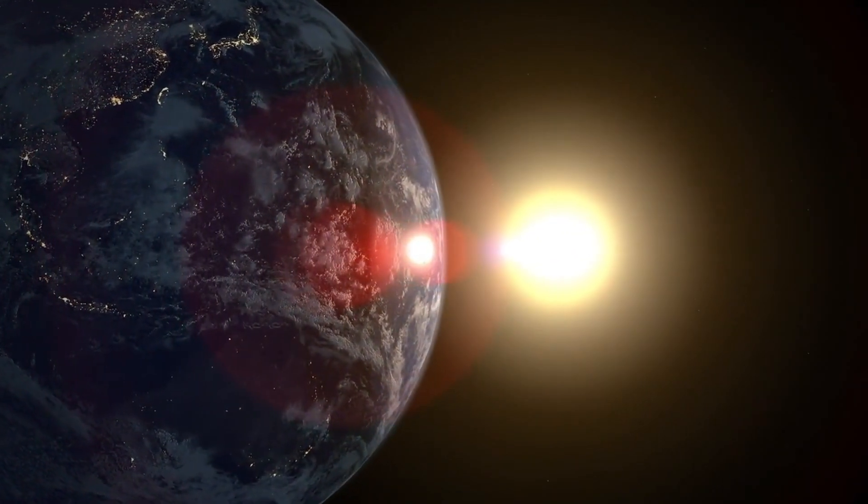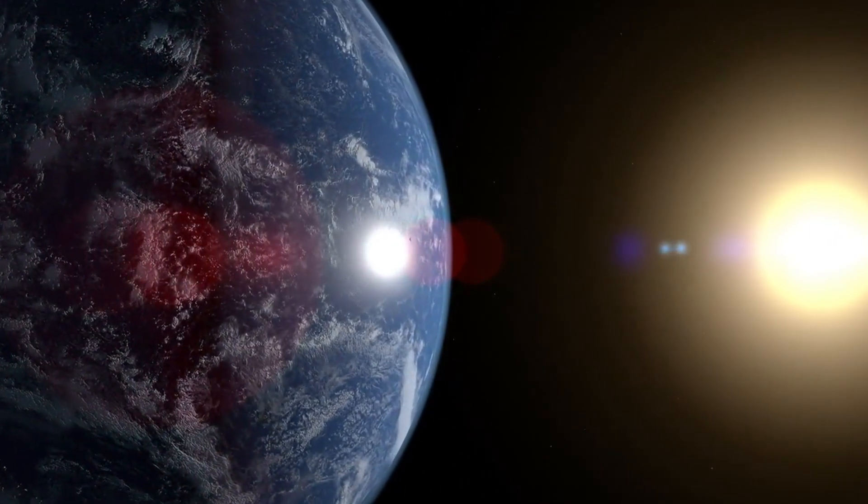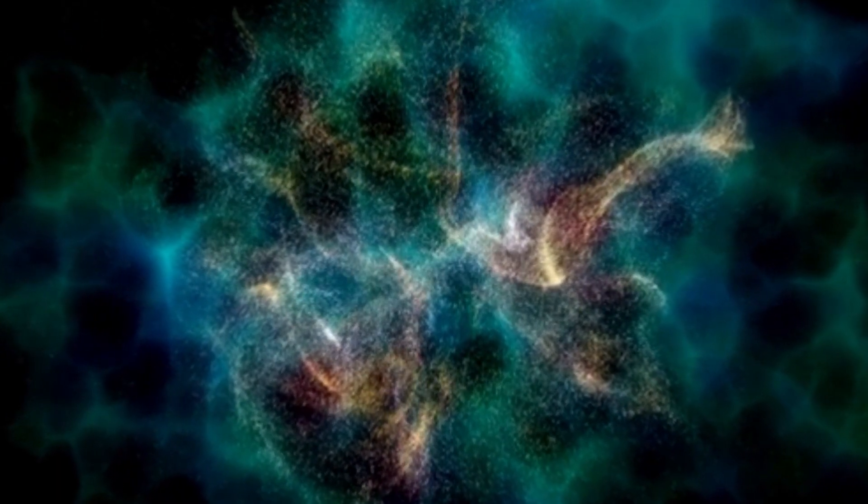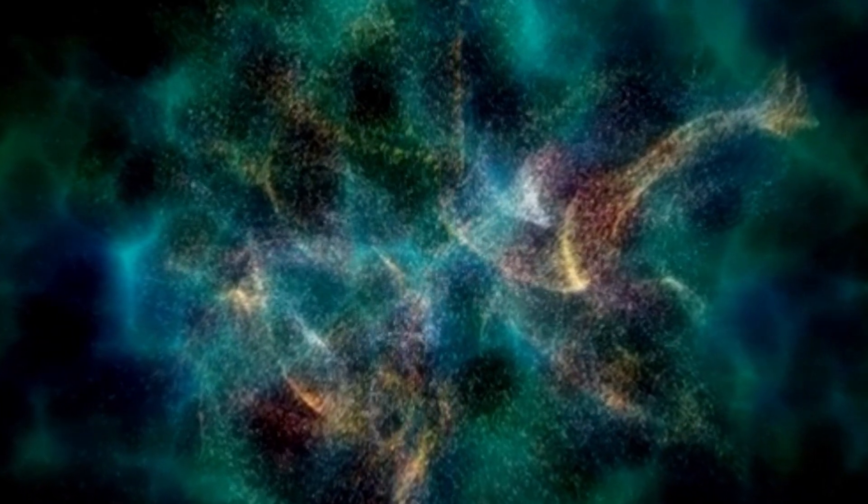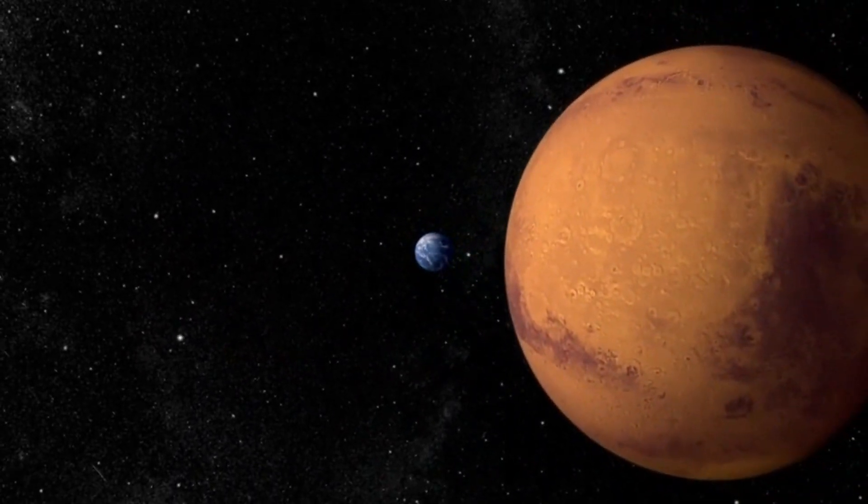Also, Voyager 2 discovered that Europa, one of Jupiter's 53 moons, has a thick icy shell more than 60 miles thick. These discoveries made scientists rethink what they thought about these faraway things in space and got them curious about whether icy moons like Europa could be places where life could exist.